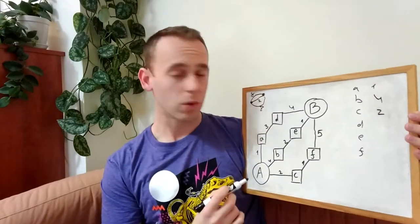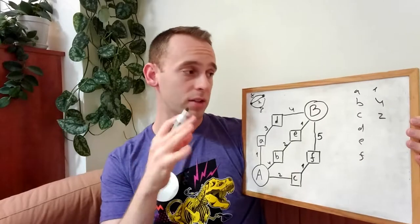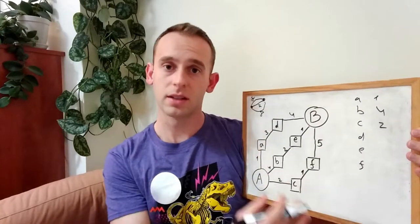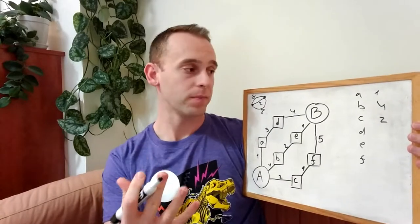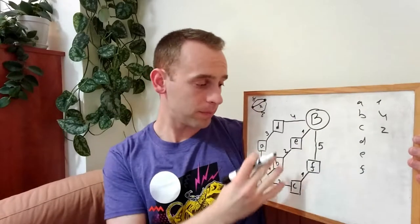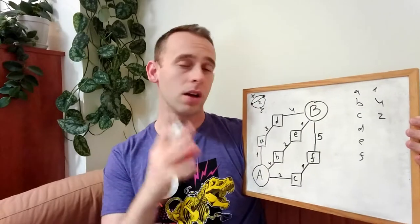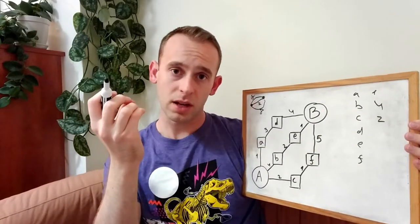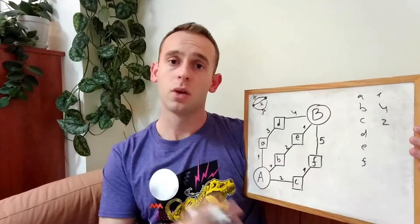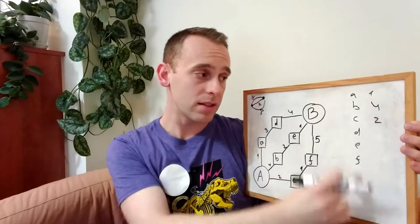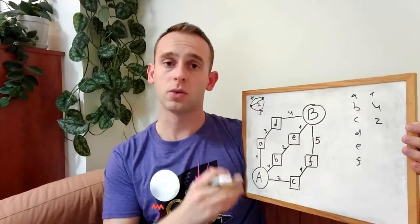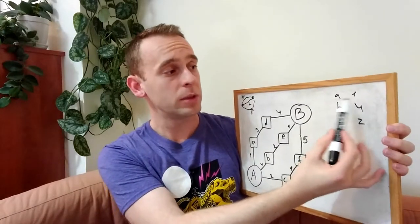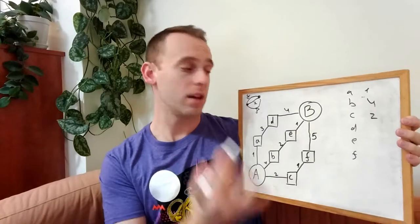So the next thing that the BFS algorithm did is it took the first neighbor from the neighbors list and dealt with it. But in order to deal with our problem, this won't be enough. What we will change in the BFS algorithm is that instead of just picking the first neighbor that we put inside the list, we'll pick the neighbor with the smallest distance from node A that we calculate.